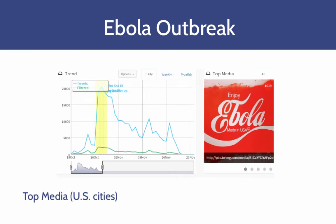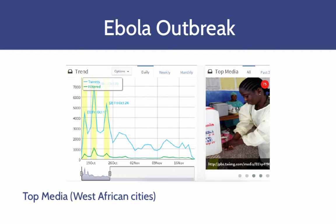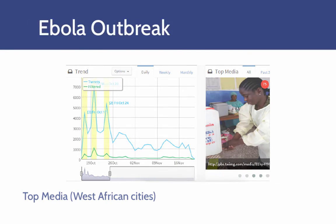The most popular pictures shared on Twitter in U.S. cities are very negative or sarcastic, while the most popular pictures and messages shared in West African cities are mainly disease prevention-oriented information or medical aid from international organizations. This case study demonstrates that the Smart Dashboard can be used to observe public opinion during and after crisis events or disease outbreaks.